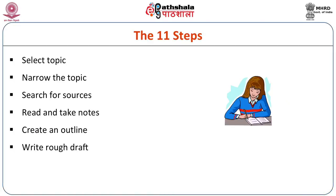There are 11 steps for any research paper. First, select the topic, then narrow that topic. For example, if you have used feminism, you will have to narrow it — whether you want to use feminist drama, the novel, or whatever dramatist or novelist you want to take up. That kind of narrowing and coming to a problem is required. Then search for sources from where you can get the material, interviews, and the primary and secondary sources for that particular topic.